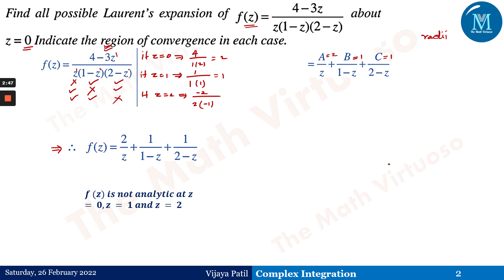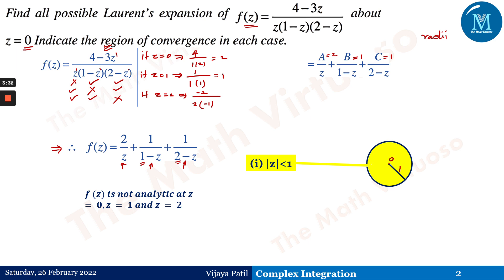This function has three singularities: 0, 1, and 2. We take care of singularities 1 and 2, giving two circles with radius 1 and radius 2. The first region is |z| < 1 — the center is at zero with radius one unit, since the nearest singularity to the origin is at distance one. This is the innermost region: all points strictly inside the circle.